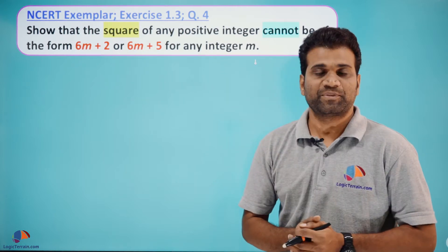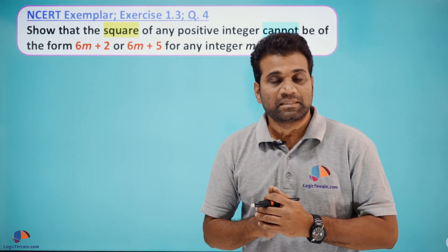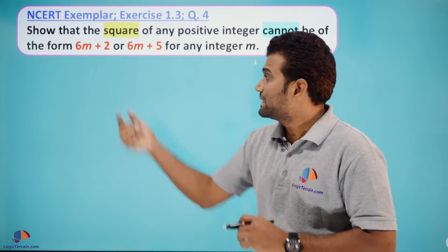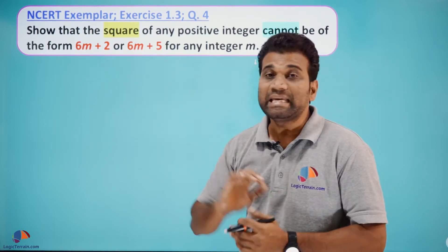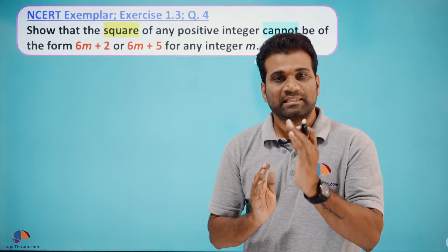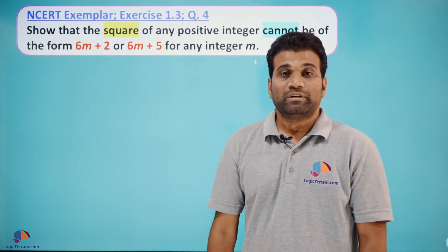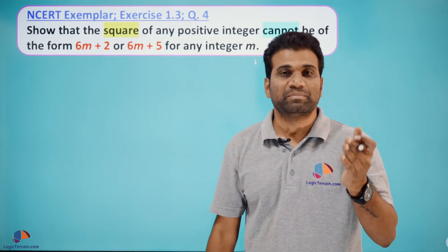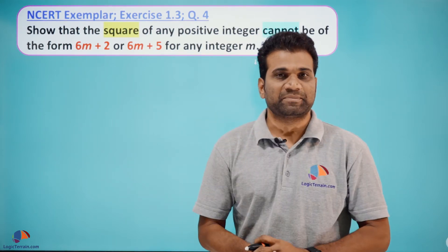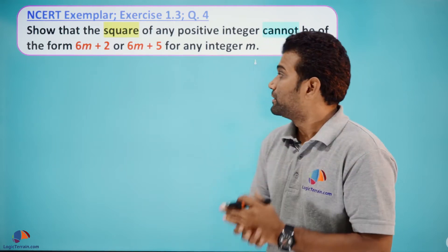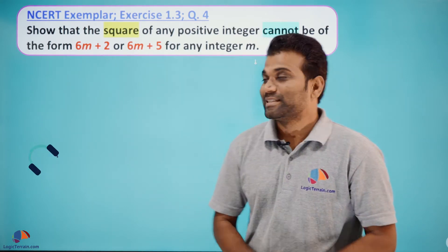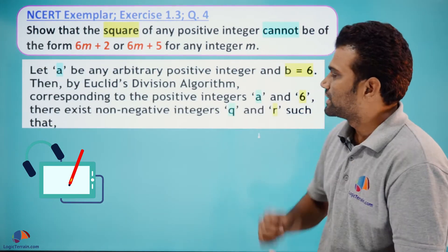So we have to prove this for any integer m. Let the positive integer be 'a'. By looking at the pattern 6m+2 and 6m+5, you can see that the divisor is 6. So 'a' is the dividend and b=6. When you divide that positive integer 'a' with 6, you will get some quotient as well as some remainder. We will prove this using Euclid's Division Algorithm. Here is the solution.